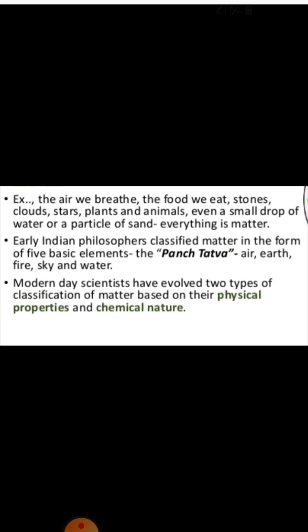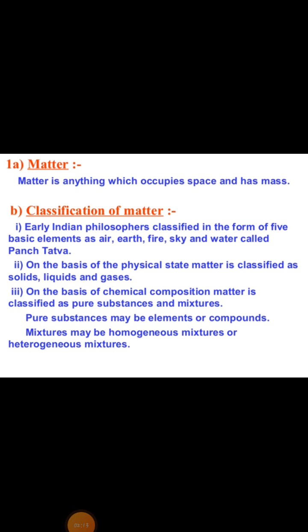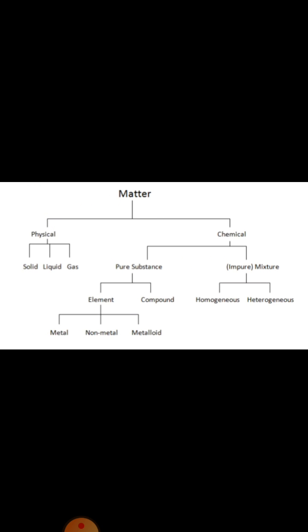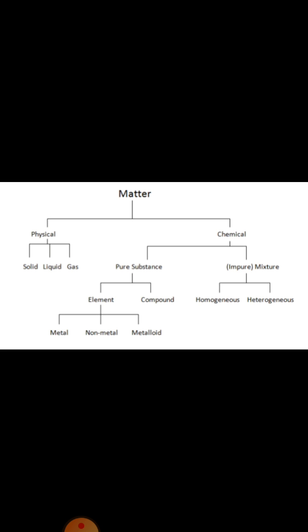Now modern day scientists classify matter in two ways: either on the basis of its physical properties or on the basis of its chemical properties. On the basis of physical properties, matter is classified as solids, liquids, and gases. On the basis of chemical properties, matter is classified into pure substances and impure substances, then further divided - pure substances get divided into elements and compounds, and impure substances are mixtures: homogeneous and heterogeneous. So in this chapter we will mainly study the classification of matter on the basis of its physical properties.